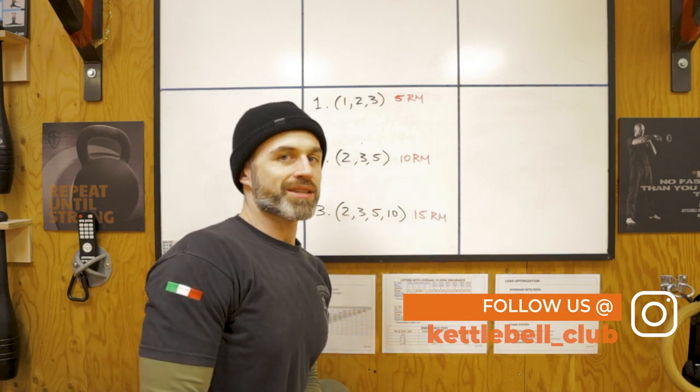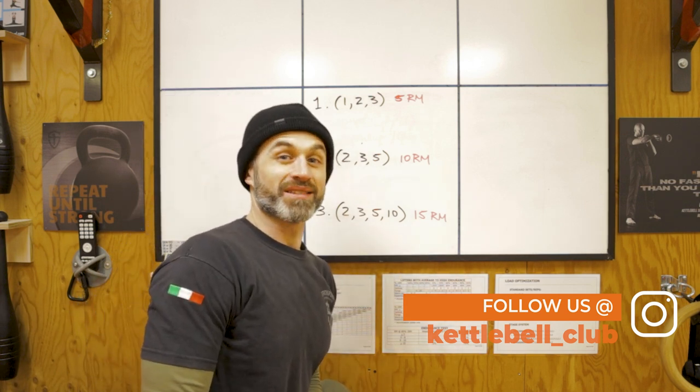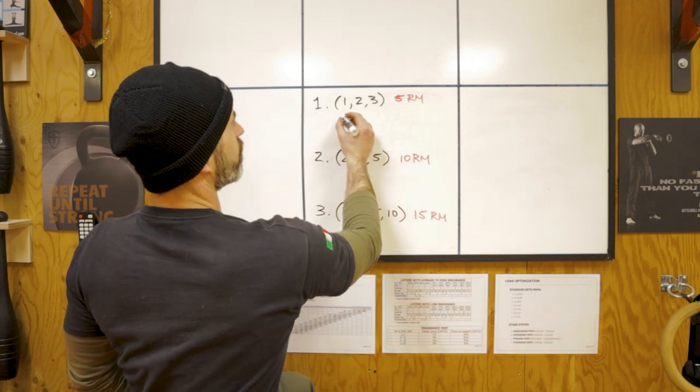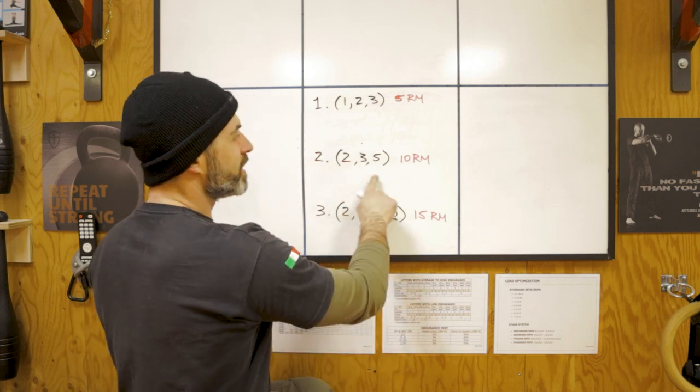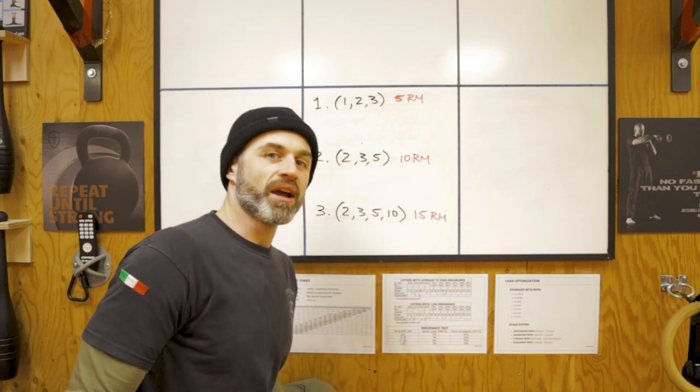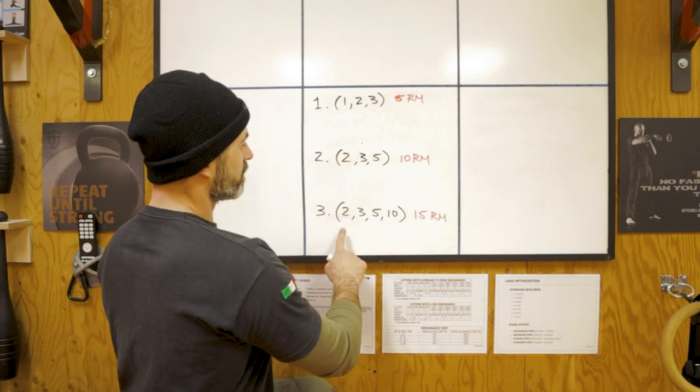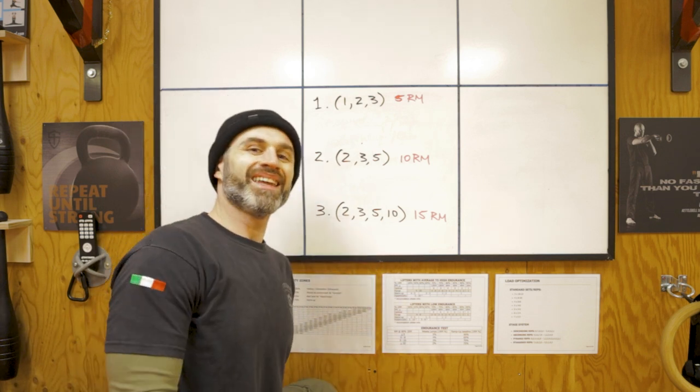The way it's gonna work, as before, you know the drill, it's gonna be Russian ladders. So for your heavy you're gonna start with ladders of one, two, three. For the medium you will do two, three, five, and for the lighter bell it's gonna be two, three, five, and ten.